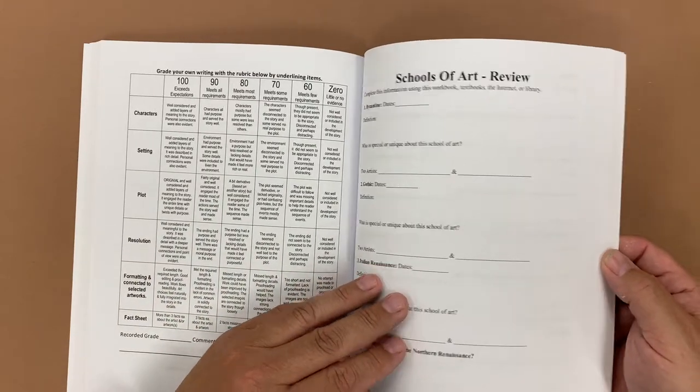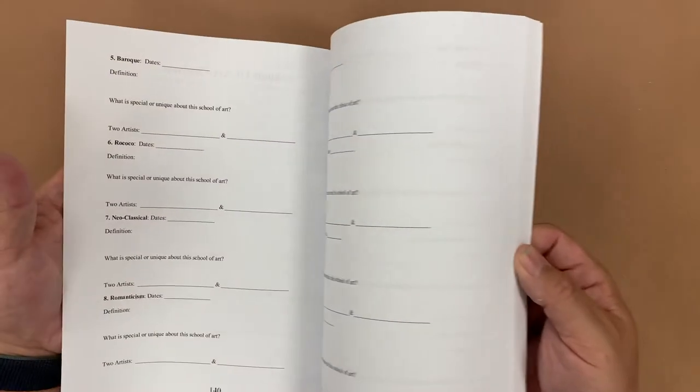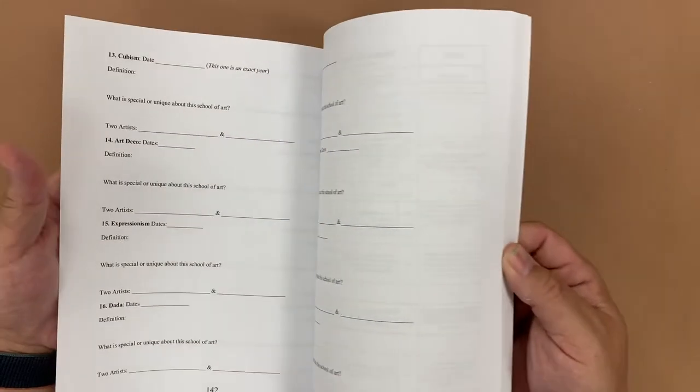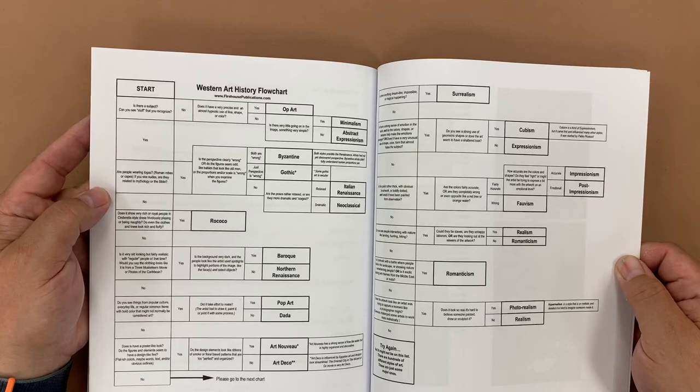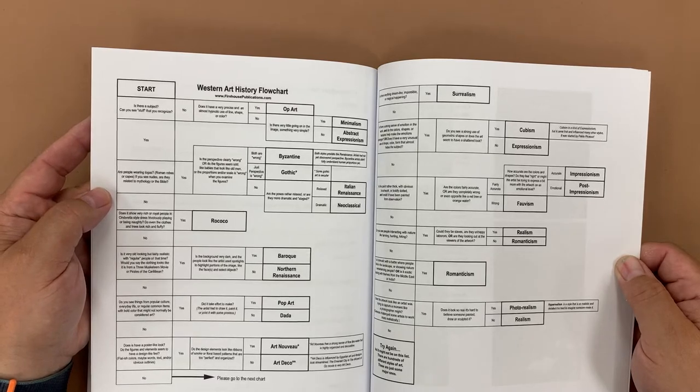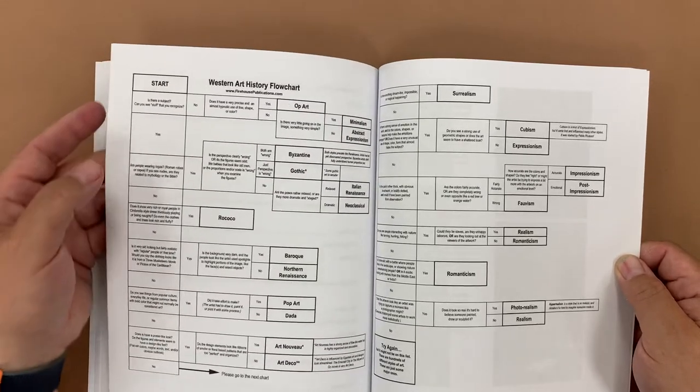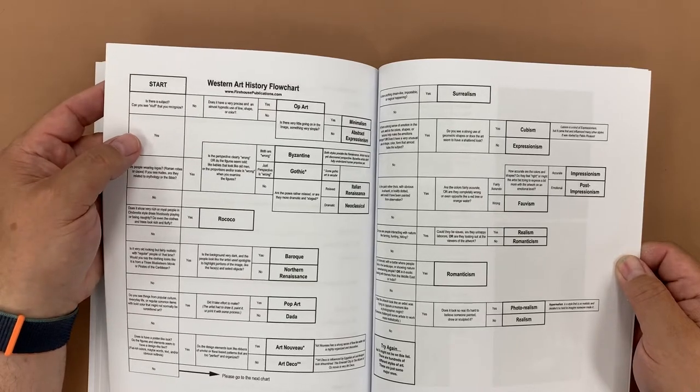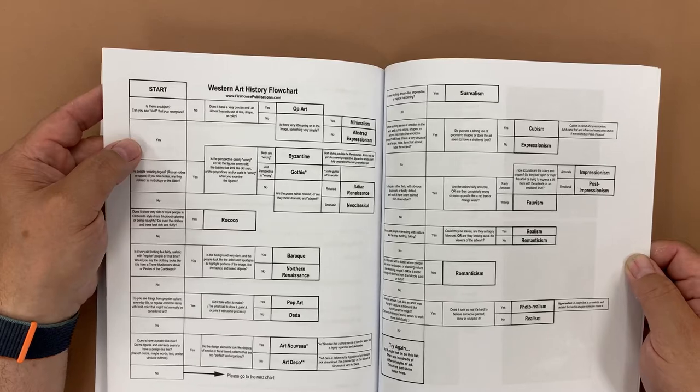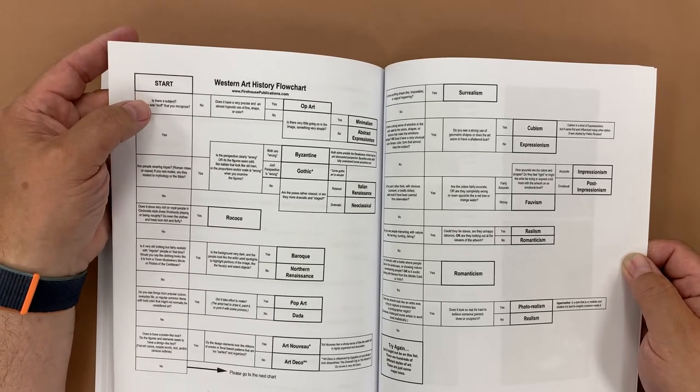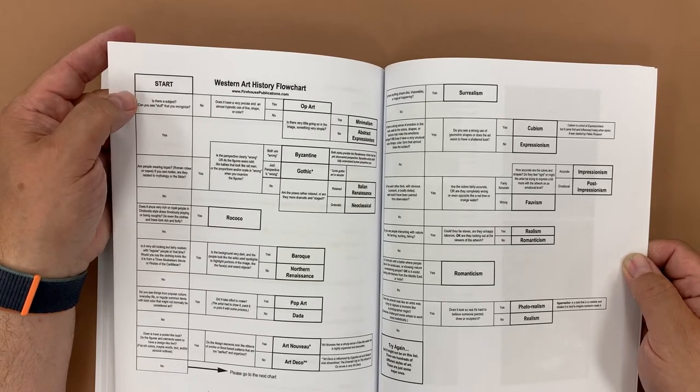Reviewing our styles of art from Byzantine through op art. So we have some pages where they can do that, and I have some video support for that. Here is our Western art history flowchart. So they can find a famous example of art. So if we said something like Demoiselles d'Avignon by Picasso and they were trying to figure out what school of art that would belong to, they would look at the image and then answer the question. So is there a subject? Can you see stuff you can recognize in that particular painting? The answer is yes.